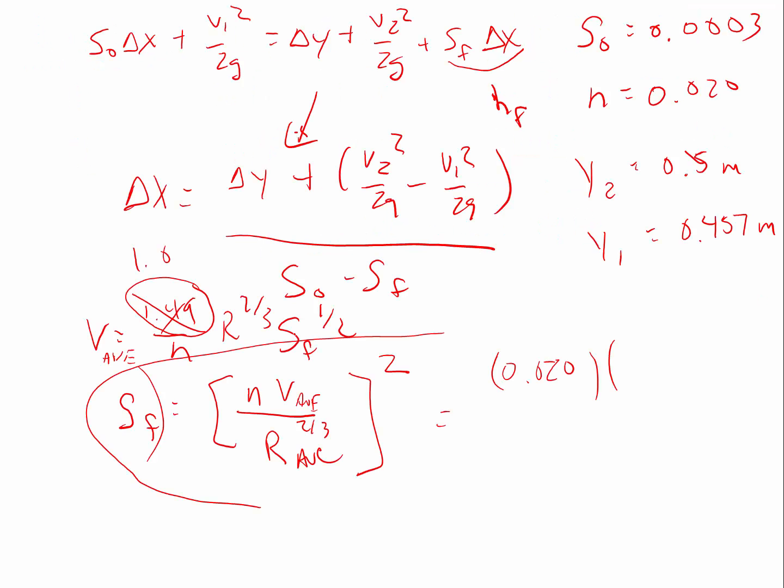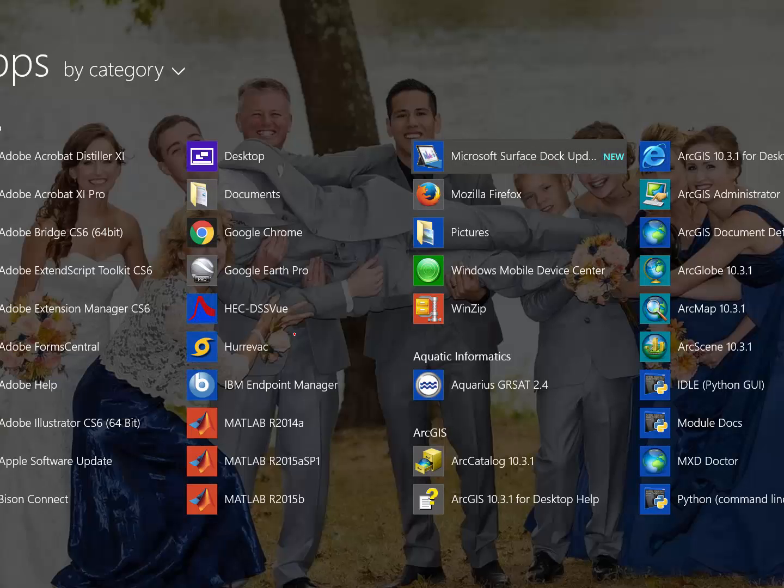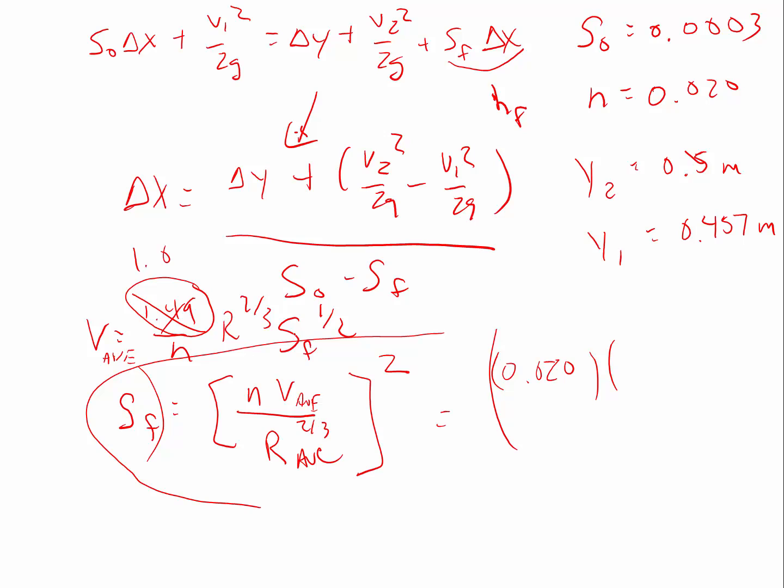And so if I go through here and I look at this s sub f, so I can, 0.020 for the n value. The average velocity is going to be, this tablet here sometimes misbehaves, 9.73 meters per second is the average velocity.